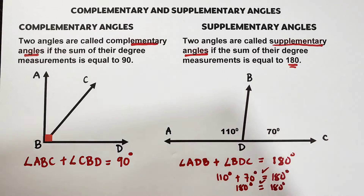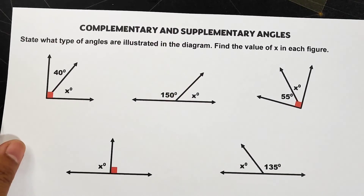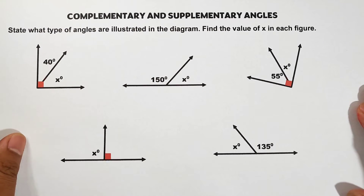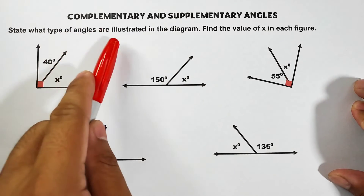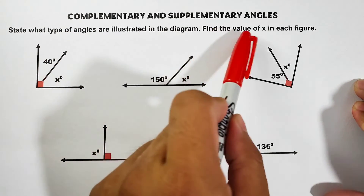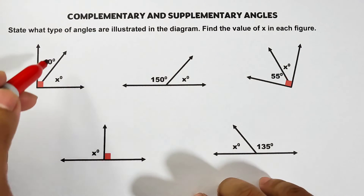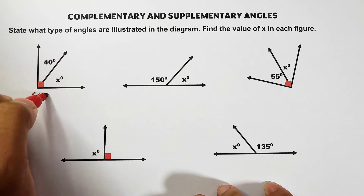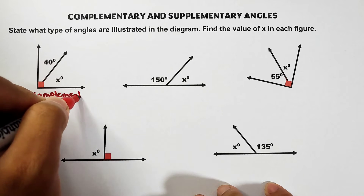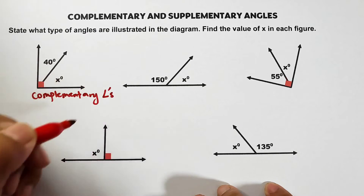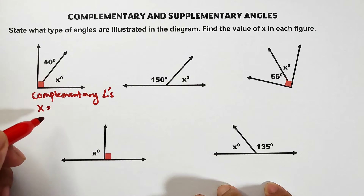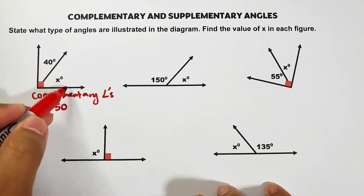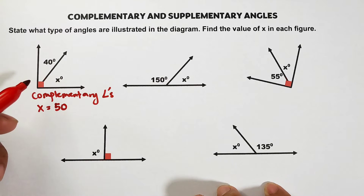The next part of our video we will try to answer some problems. We are asked to state what type of angles are illustrated in the given diagram and find the value of x in each figure. Let's start with the first figure — these two angles are definitely complementary angles. The value of x here is 50, meaning this angle measures 50 degrees.